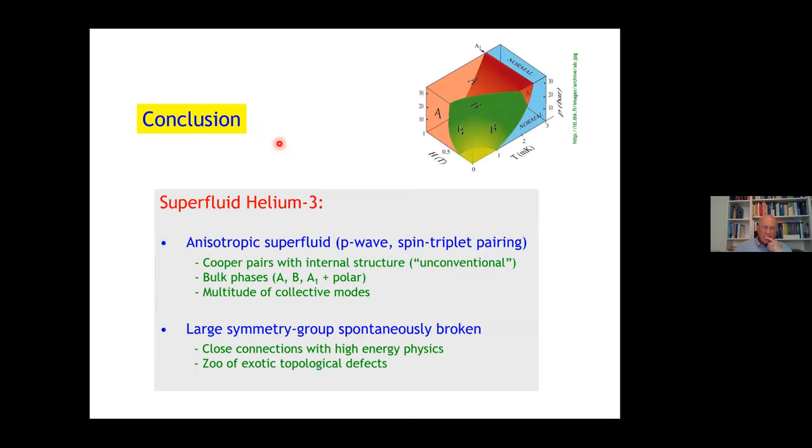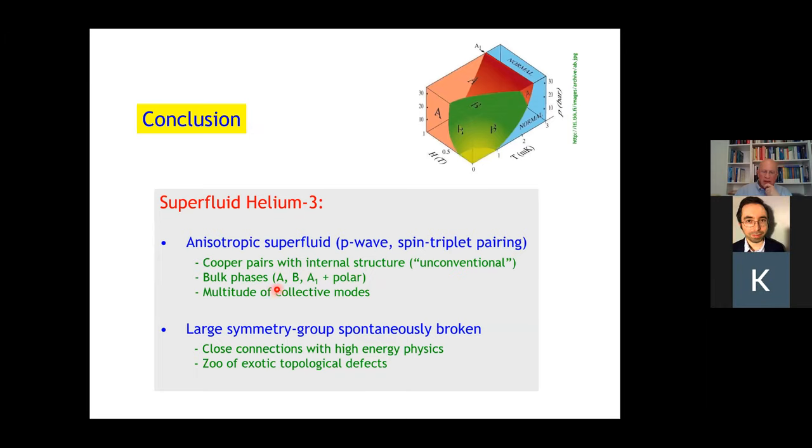That really brings me to the end. So my conclusion is this. If you think of superfluid helium-3, it's an anisotropic superfluid, P-wave and the first triplet pair condensate. The Cooper pairs have an internal structure, making it an unconventional superfluid. There are four bulk phases, three homogeneous A, B, A1, and polar found in anisotropic disordered environment. There's a multitude of collective modes. All that can be explained in the frame of a large symmetry group which is spontaneously broken. This allows one to make close connections with high energy and particle physics, and also to explain that zoo of topological defects. Thank you for your attention.